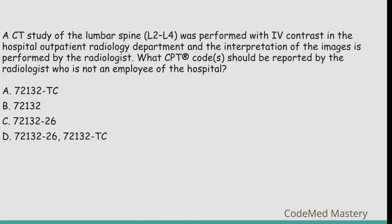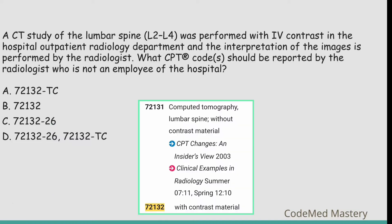Next question: A CT study of the lumbar spine was performed with IV contrast in a hospital outpatient radiology department, and the interpretation of images is performed by a radiologist who is not an employee of the hospital. Which CPT code should be reported? All options include 72132, which is for CT lumbar spine with contrast material — that is the correct base code.